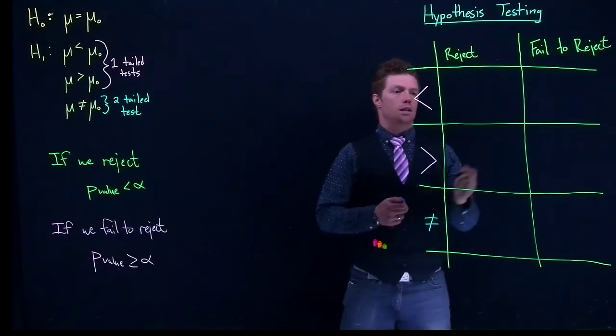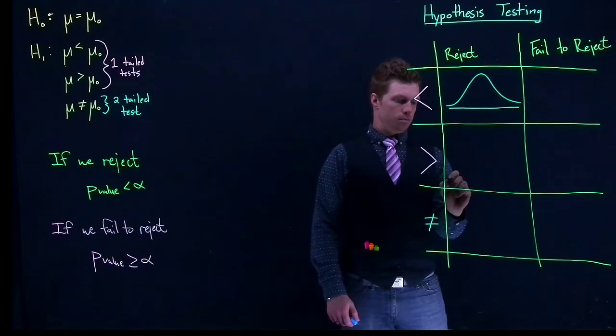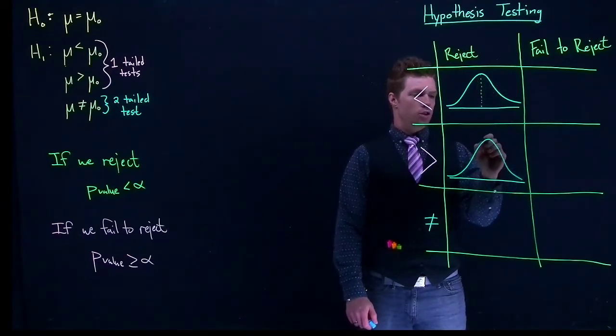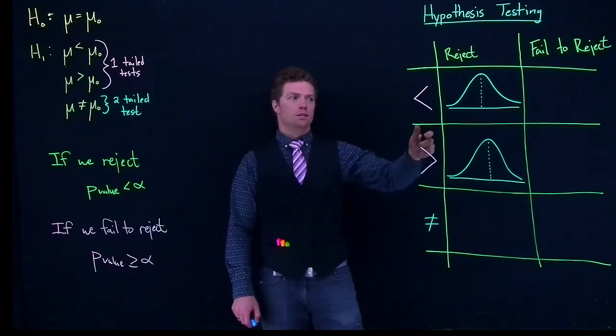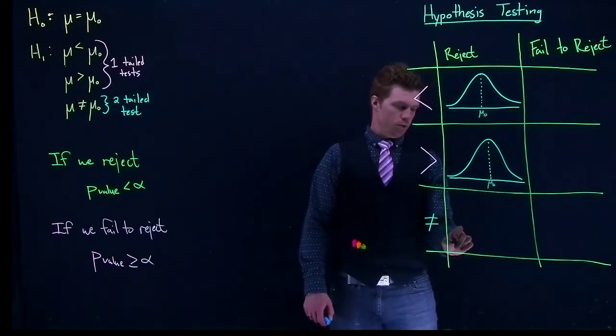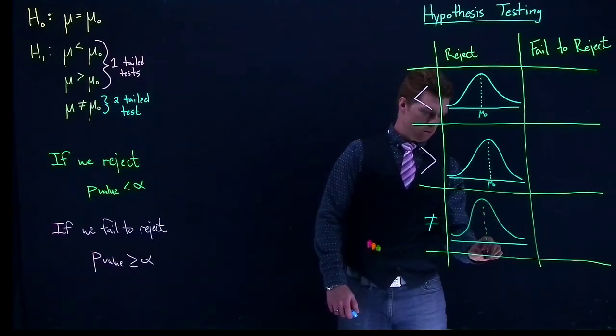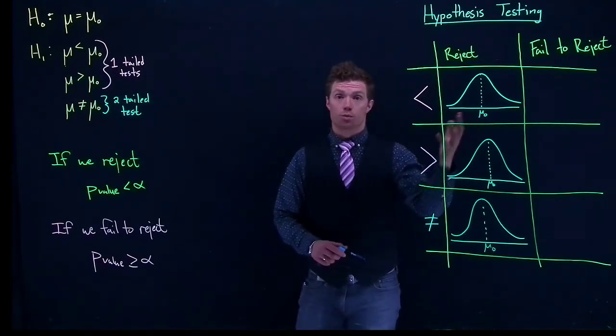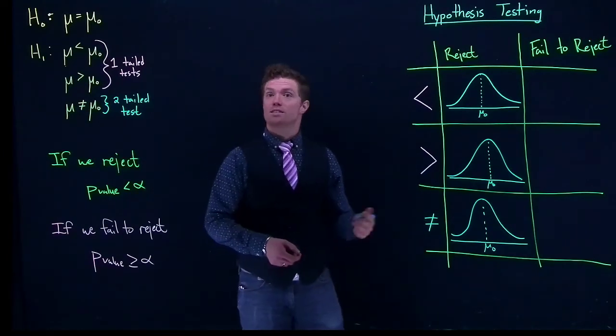So give me just a second, and I'm going to draw up a few distributions. Remember that when we are doing these, we assume that the null hypothesis is true until we can prove otherwise. So we are going to center these distributions about mu-naught. We're going to assume that what the null hypothesis is claiming is in fact true. And our data we're collecting, we're trying to see, is our sample weird enough that we are going to claim that the null hypothesis is not true, and make some other claim instead.